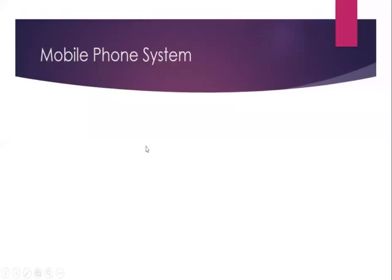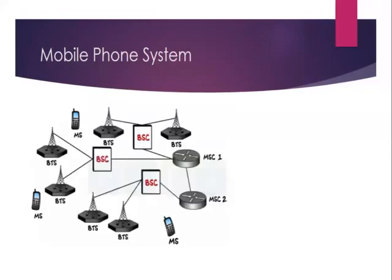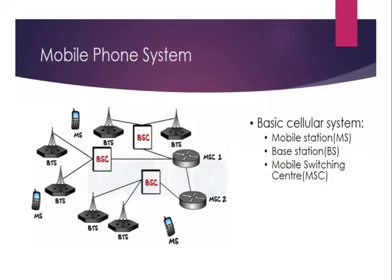Now let us study the mobile phone system. This is the basic structure of the mobile phone system, where MS means mobile station, BTS is base transceiver station, BSC is base station controller, and MSC is mobile switching center. In this system, MS is the mobile phone of the user, and every cell has its own BTS at its center.